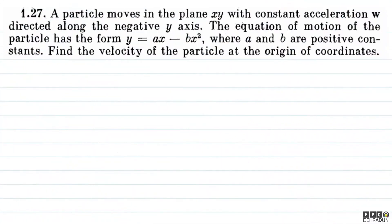So, basically, we have given a particle which moves in the xy plane, whose acceleration is w vector directed along the negative y-axis. We have the equation of motion: y = ax - bx². We have to find the velocity at the origin.